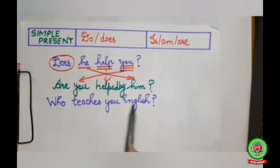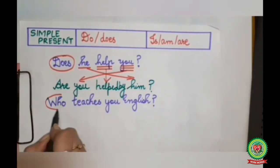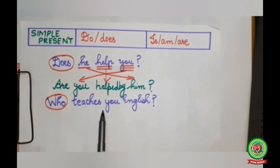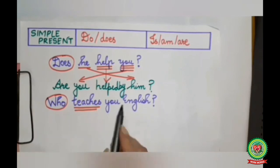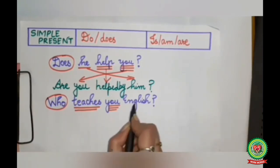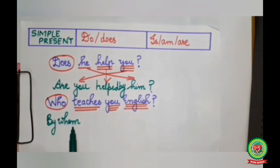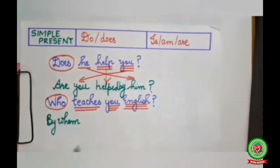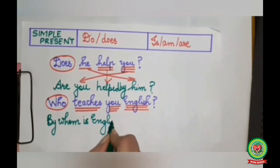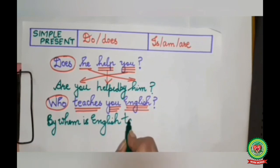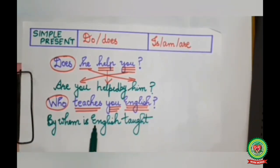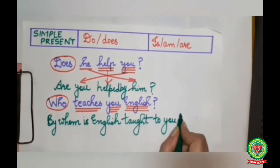The second sentence: 'Who teaches you English?' 'Who' is your question word — we circle it. In this question there is no subject, so we will not do a single underline. 'Teaches' is your verb — double underline. 'You' and 'English' are both your objects. 'Who' will change into 'by whom'. After 'by whom' we add the helping verb. Since 'English' is going to come in the beginning, we use 'is'. So the passive becomes: 'By whom is English taught to you?'